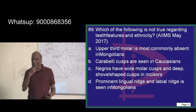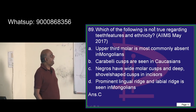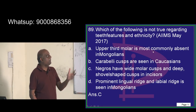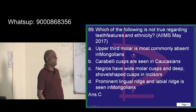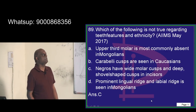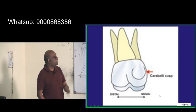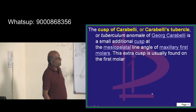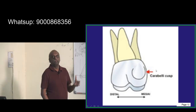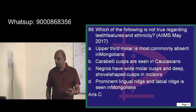With regard to teeth and ethnicity, what is the rule? Carabelli cusps are seen in Caucasians. The upper third molar is commonly absent in Mongolians, and a prominent lingual ridge and labial ridge are also seen in Mongolians. The Carabelli cusp is found on the maxillary first molar and is very commonly seen among Caucasians.